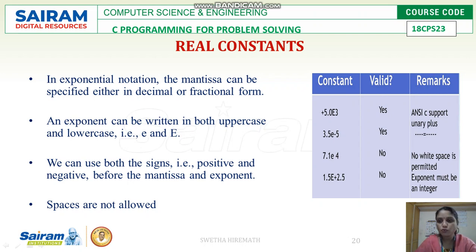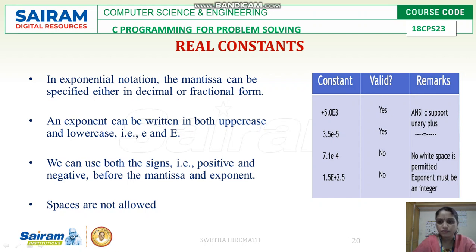Based on these conditions, some representations are valid and some are not. +5.0E3 is valid — it has a sign, no spaces, and an exponent value. 3.5E0.5 is also valid. However, 7.1E 4 is not valid because a white space is included between E and 4. 1.5E+2.5 is not valid because the exponent must be an integer, not a fractional value.